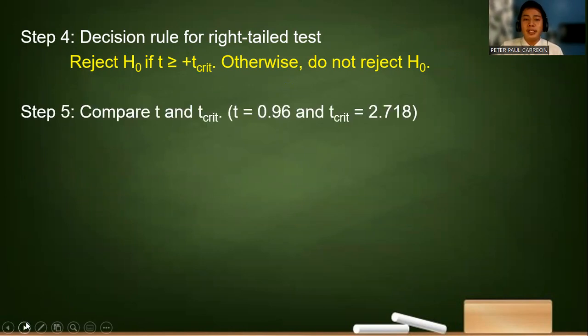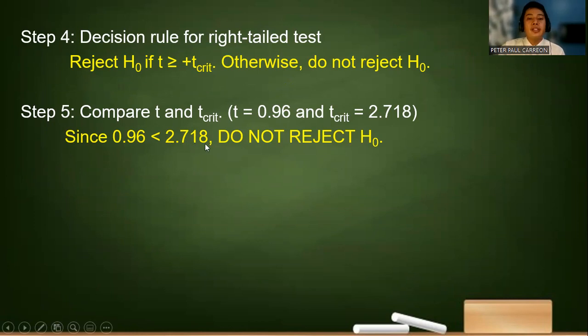Let us compare. Is 0.96 less than 2.718? Of course, it is a false statement because it is greater than. So the correct decision making is fail to reject or do not reject the null hypothesis.